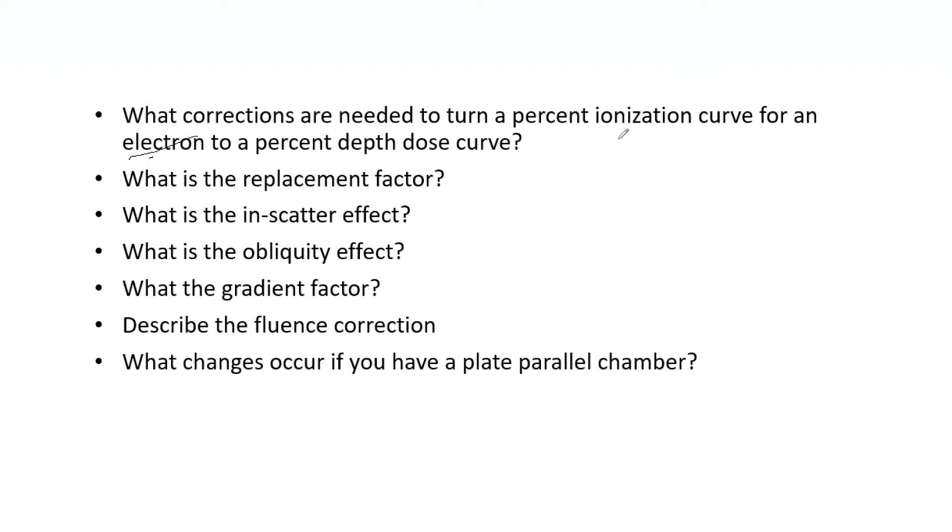To answer the first question, for an ionization chamber you have to correct for the restricted mass stopping power ratio of water to air. That is, if you remember in your studies, the L over rho, and of course that's going to be water to air. This is a function of mean energy and depth. You also need to account for the replacement factor, which we're going to cover here soon. This does differ a little bit between electrons and photons.